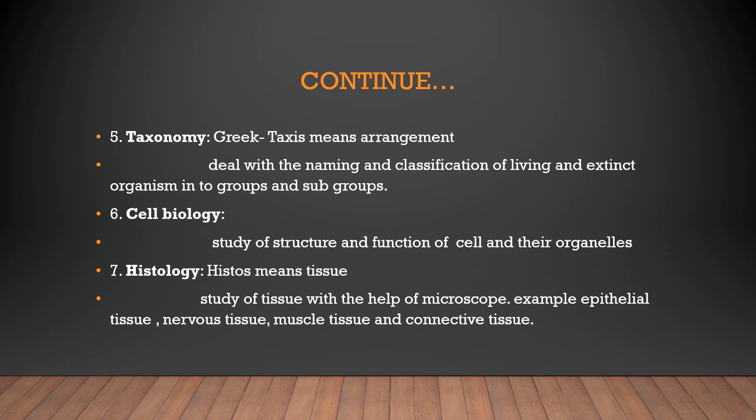Next is Taxonomy, derived from the Greek word 'taxis,' meaning arrangement. It deals with the naming and classification of living and extinct organisms into groups and subgroups. Since there is a huge amount of data on living and extinct animals, scientists — notably Carlos Linnaeus — classified these organisms into groups to make it easier to understand their similarities, differences, and characteristics.